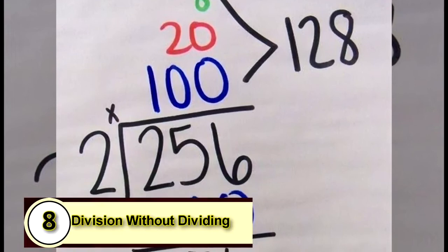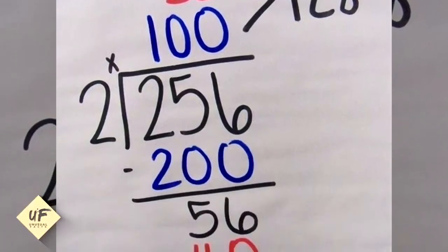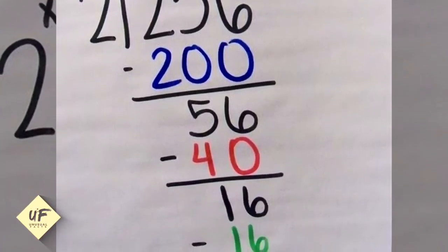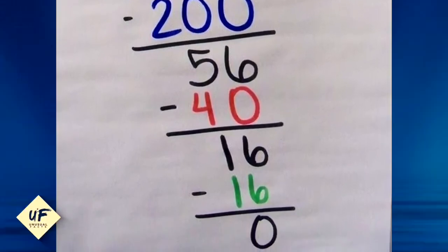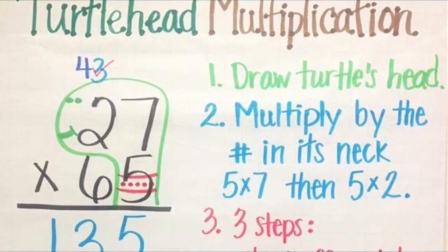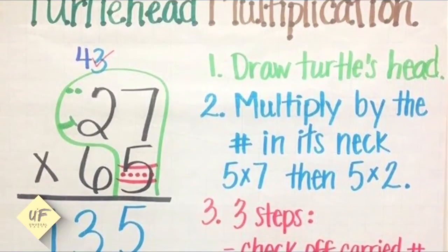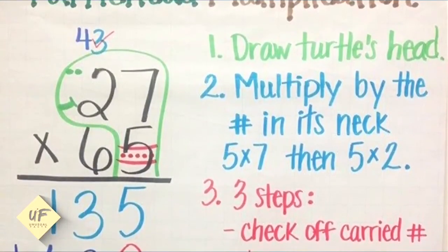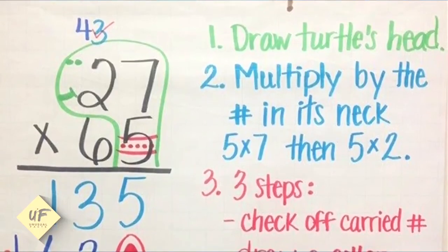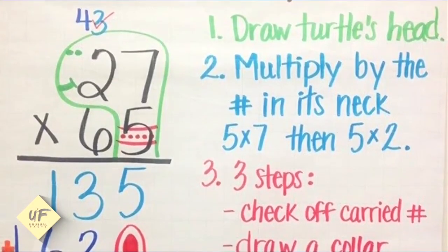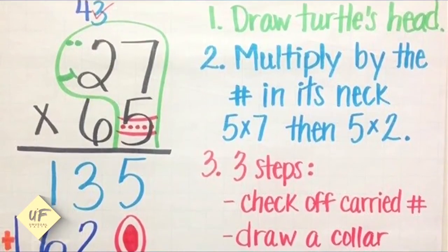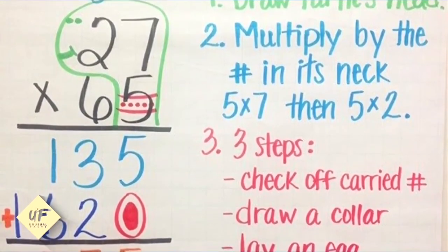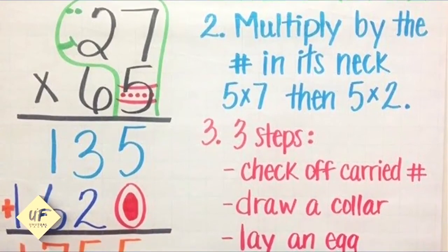Number eight: division without dividing. Take a look at this division problem and see if you can solve it without dividing. Let us know in the comments below how you did. Number nine: turtle head multiplication. Have you ever heard of turtle head multiplication? I certainly haven't, but I think I can get this one together pretty easily. So you have 27 times 65. First, you want to draw a turtle's head.